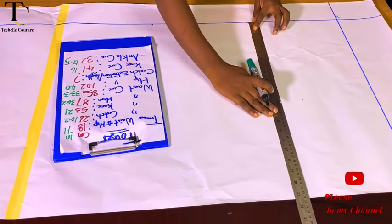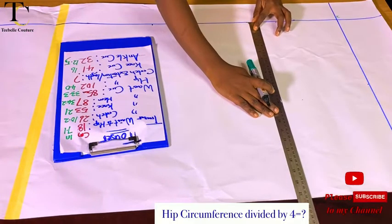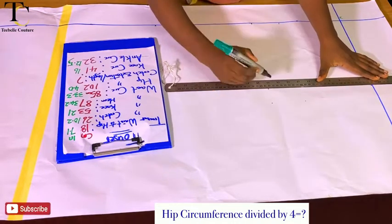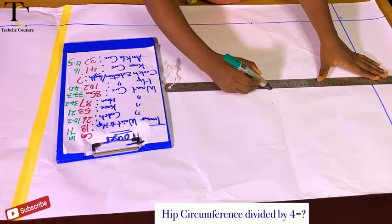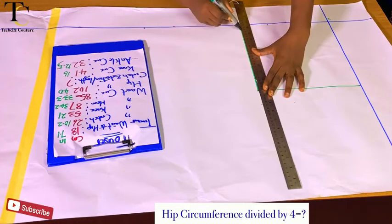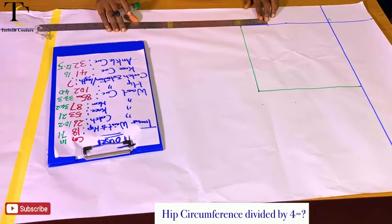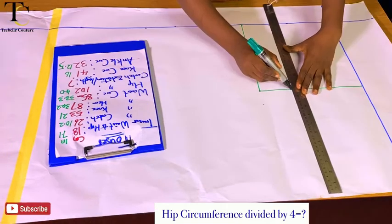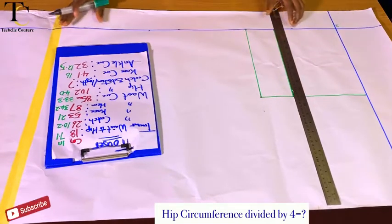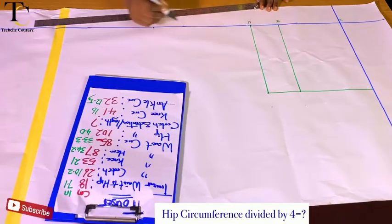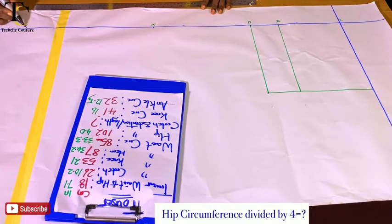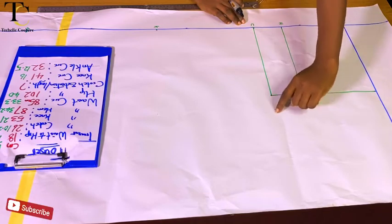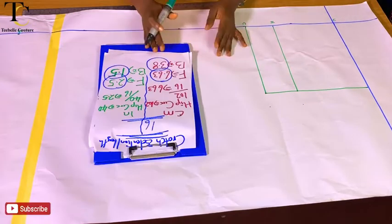After getting those measurements, I'm going to divide my hip circumference into four. I'll mark it at the waistline and at the crotch line and connect them together. I'll also measure what I have on my hip so I can connect the line on my hip. So I have my waist, hip, crotch, knee, and hemline. The next thing I'm going to be marking is my crotch extension.